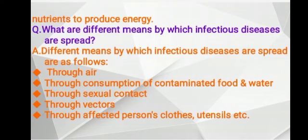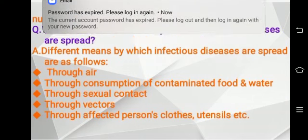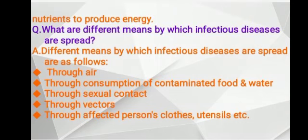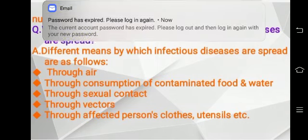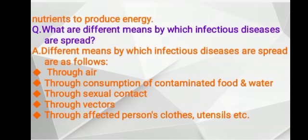Next question: What are the different means by which infectious diseases are spread? Different means include: through air, through consumption of contaminated food and water, through sexual contact, through vectors, and through an affected person's clothes, utensils, etc.